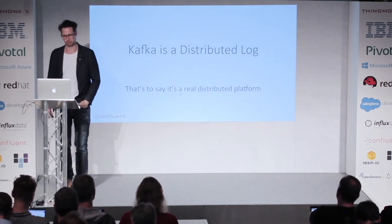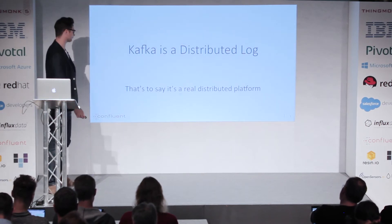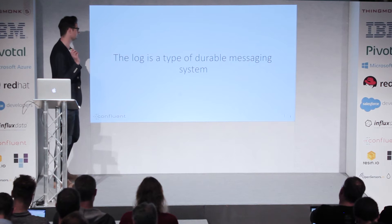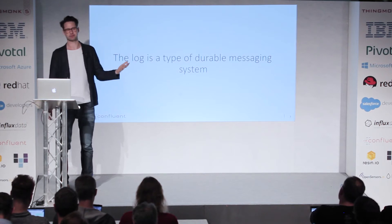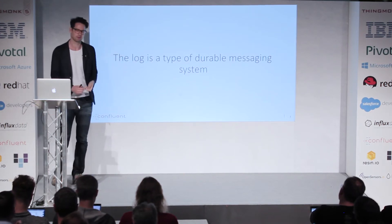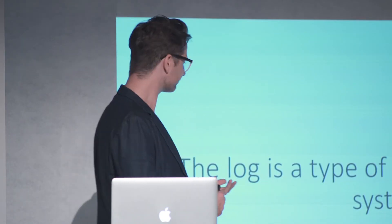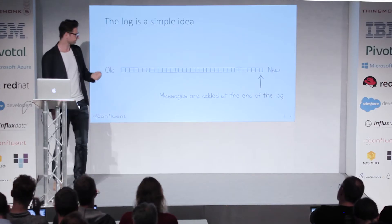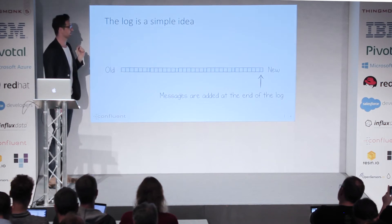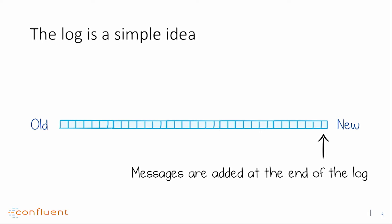Kafka itself is a thing called a distributed log — a real distributed platform. A log is a type of durable messaging system. You may have used other types of messaging systems, maybe AMQP ones, JMS, things like ActiveMQ, RabbitMQ, etc. Kafka's a little bit different because it's really a distributed log. That is a very simple idea, but quite a powerful one. When messages are taken into Kafka, they are literally appended onto the end of a log. You can think of a log a bit like a file, except you don't rewrite it — you just append to the end of it.